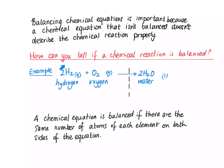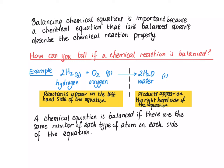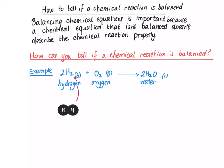That means on the left side we have to have the same number of atoms of hydrogen as we have on the right side, and the same number of atoms of oxygen on each side. The things to the left of the arrow are called reactants, and the things to the right of the arrow are called products.